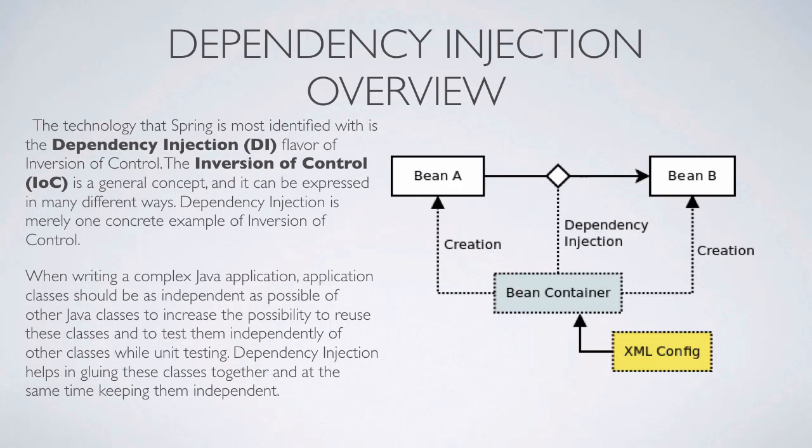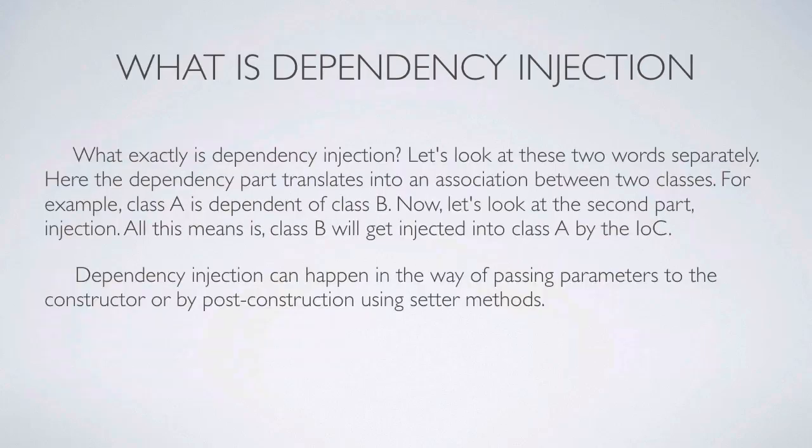The goal is to increase the possibility to reuse these classes and to test them independently of other classes during unit testing. This is called abstraction. Dependency injection helps in gluing these classes together while at the same time keeping them independent.